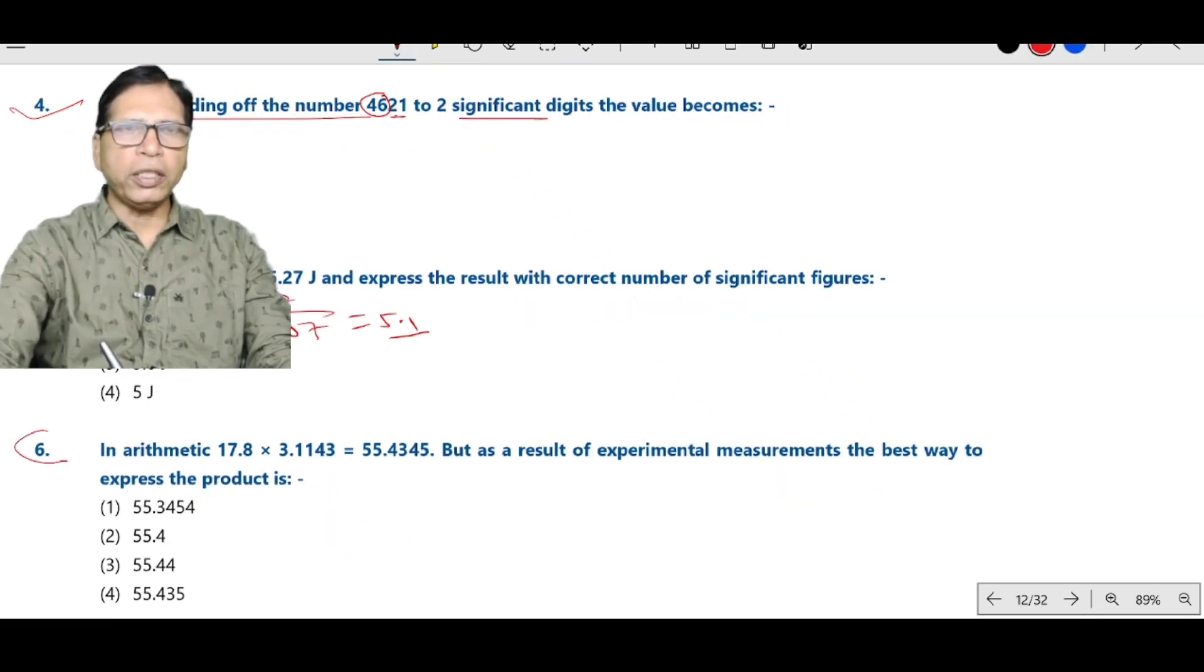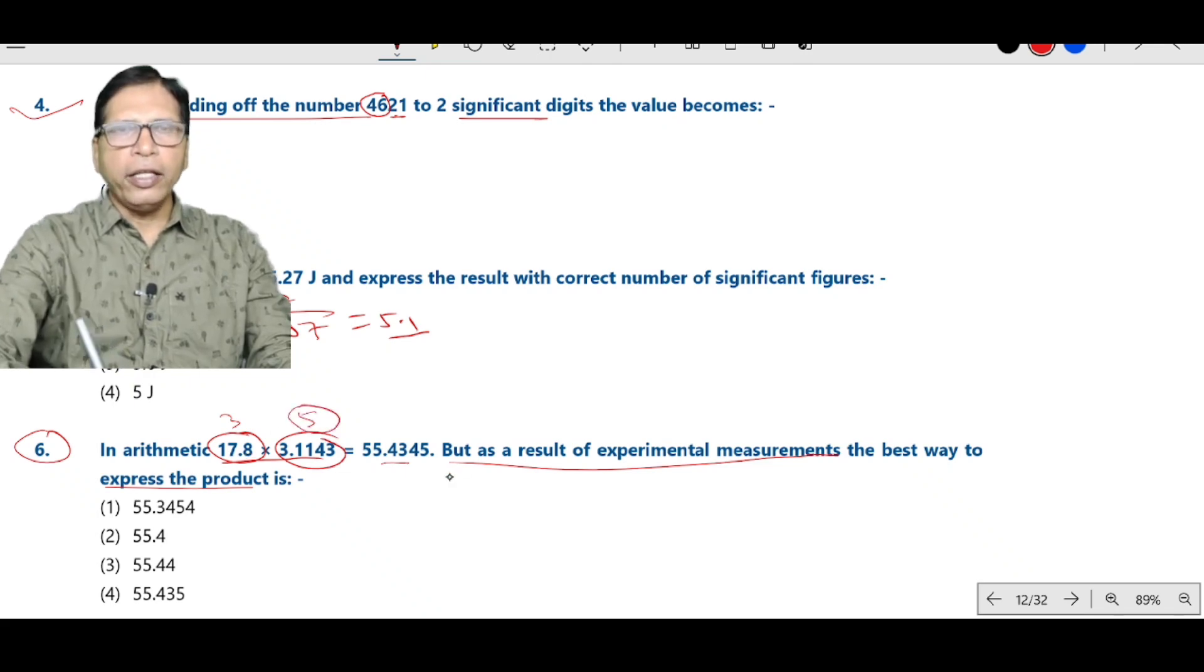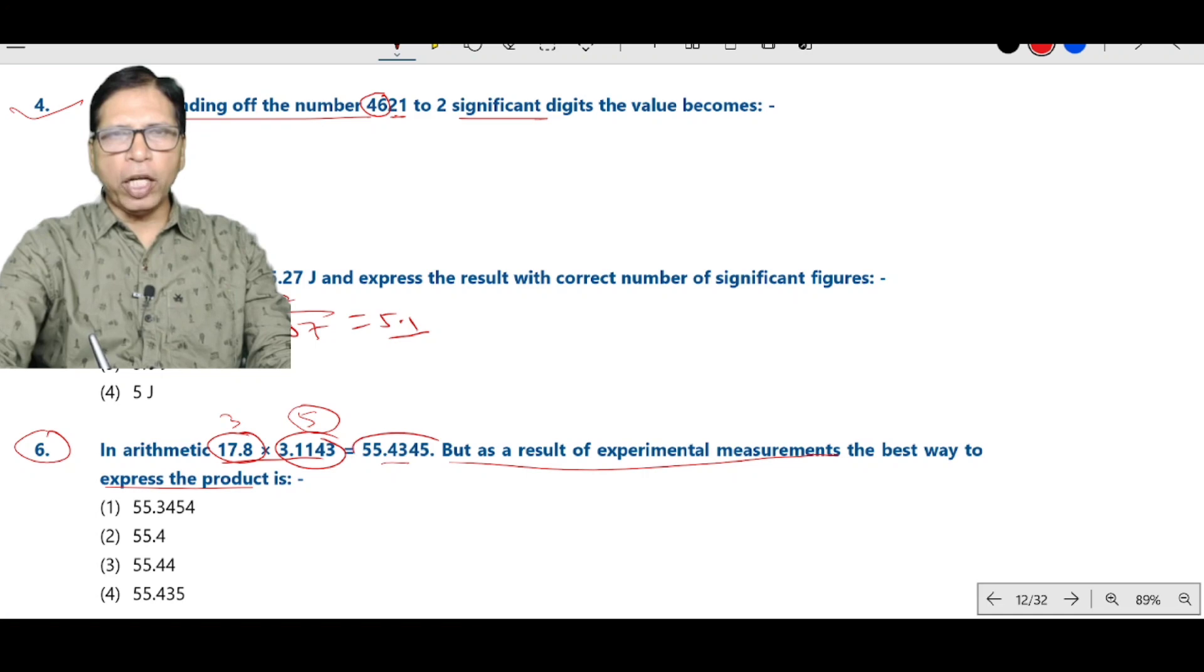Now question number 6. Arithmetic, this into this. But as a result of experimental measurement, the best way to express the product. It has 3 significant figures. It has 5 significant figures. So in multiplication, the significant figure of the result is the significant figure of that number which has least significant figures. So here 55.4 is the answer.